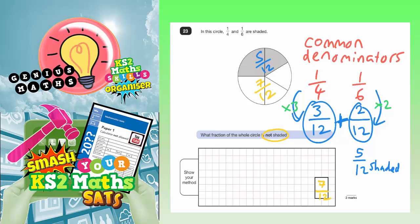Now we chose a common denominator of 12 there. But if you couldn't spot that 12 has both four and six going into it, one way of getting a common denominator is to times the two existing denominators together. So let's do an alternative way over here. So one quarter and one sixth. Multiplying the two denominators together will always give a common denominator. So you could have that into twenty-fourths, because four times six is 24.